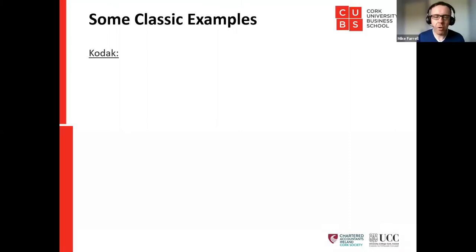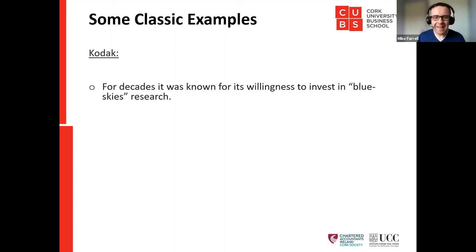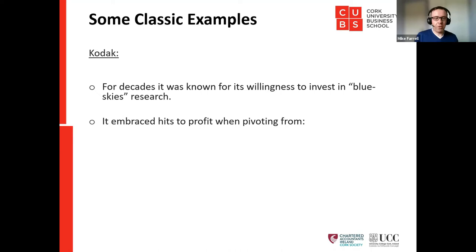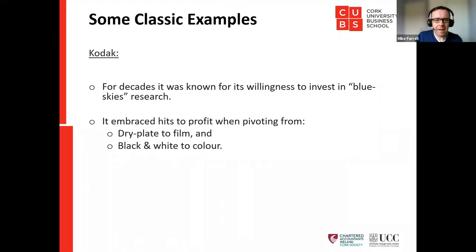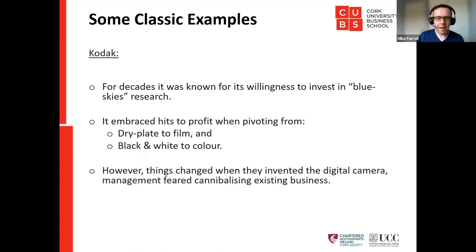To illustrate the point further, let's look at some classic examples of companies that fell victim to this. First: Kodak. For decades it was known for willingness to invest in blue-sky research. It embraced hits to profit when pivoting from dry plate to film and from black-and-white to colour. It had no problem taking hits to profit because it knew it had to pivot onto something new.